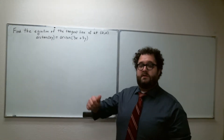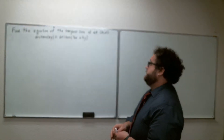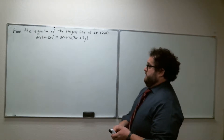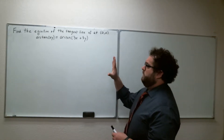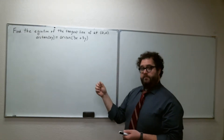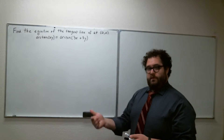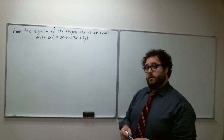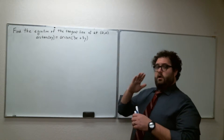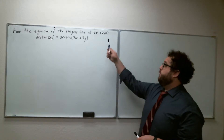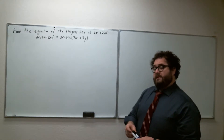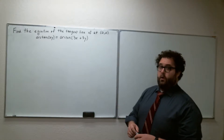We want to solve this question: figure out the equation of the tangent line at the origin (0,0) of arctan(xy) equals arcsin(3x + 3y). Remember, our general plan of attack when finding the tangent line at a point is to first find the derivative, then evaluate at our particular point — in this case (0,0) — which gives us the slope of the tangent line. Then use point-slope form with our point (0,0) to write the equation of the tangent line in slope-intercept form y = mx + b.